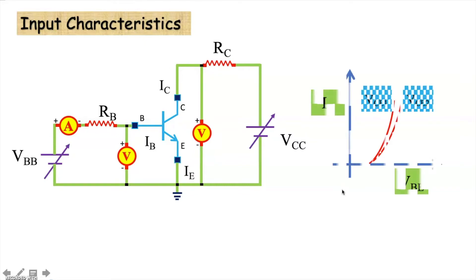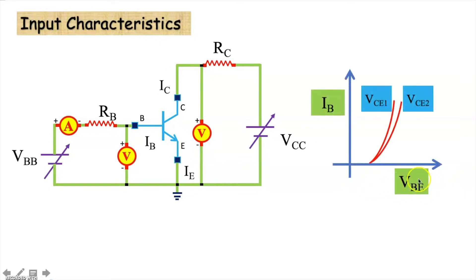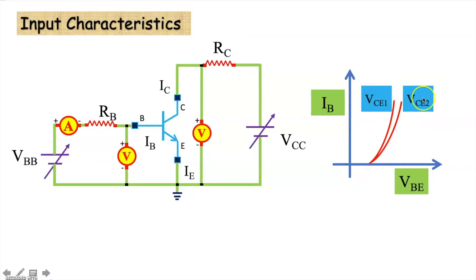If we plot a graph between input voltage VBE and input current IB, we get characteristics like this. We can have multiple plots for different output voltages as shown here.